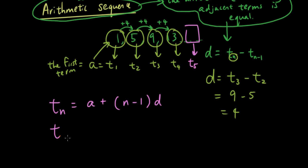So T5 is equal to A, which is 1, plus, now how many times have we added the number D from the first term? Well, we've increased it by D once, twice, three times, four times. Right, so it's going to be 5 minus 1 times D, which is 4.